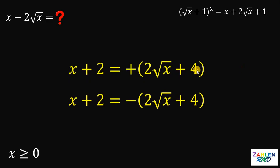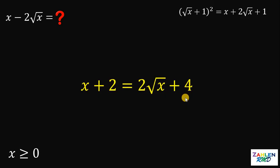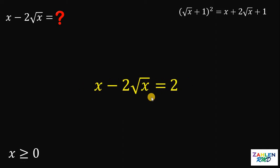Again, we have two possible answers — positive and negative. Take note that we want the value of x minus 2 times square root of x. The question is, which equation will give us that value? The answer is the first equation. The right-hand side is just 2 times square root of x plus 4. If we subtract 2 times square root of x on both sides, this will give us x minus 2 times square root of x — which is what we want — plus 2 equals 4. Subtracting 2 on both sides gives us x minus 2 times square root of x equals 2.